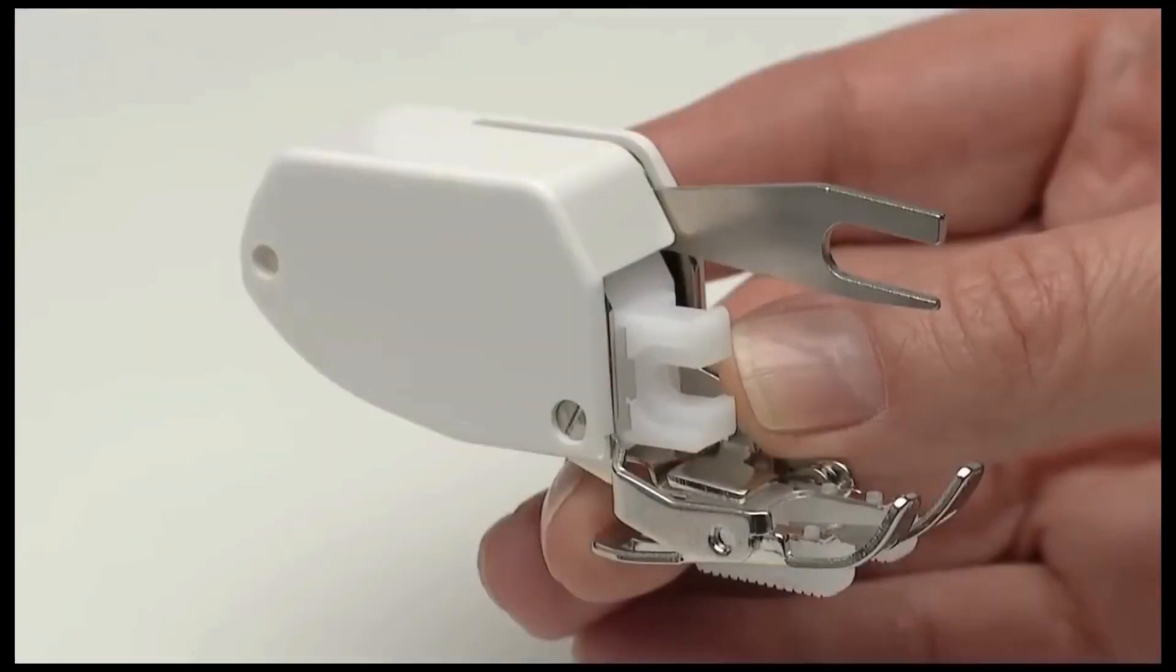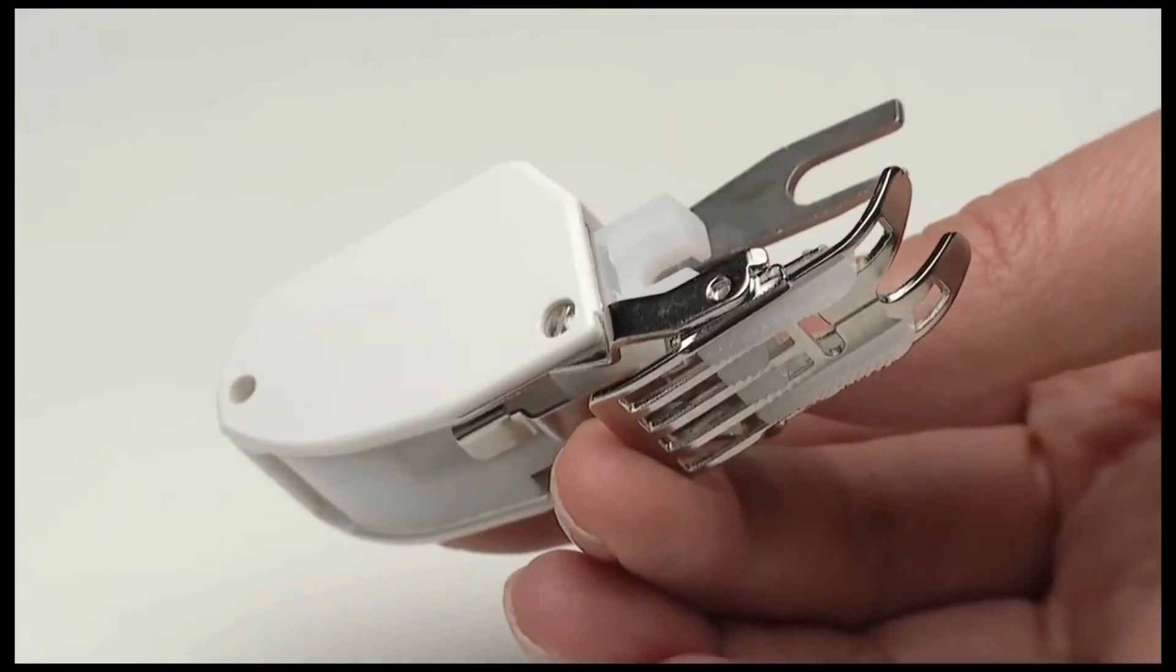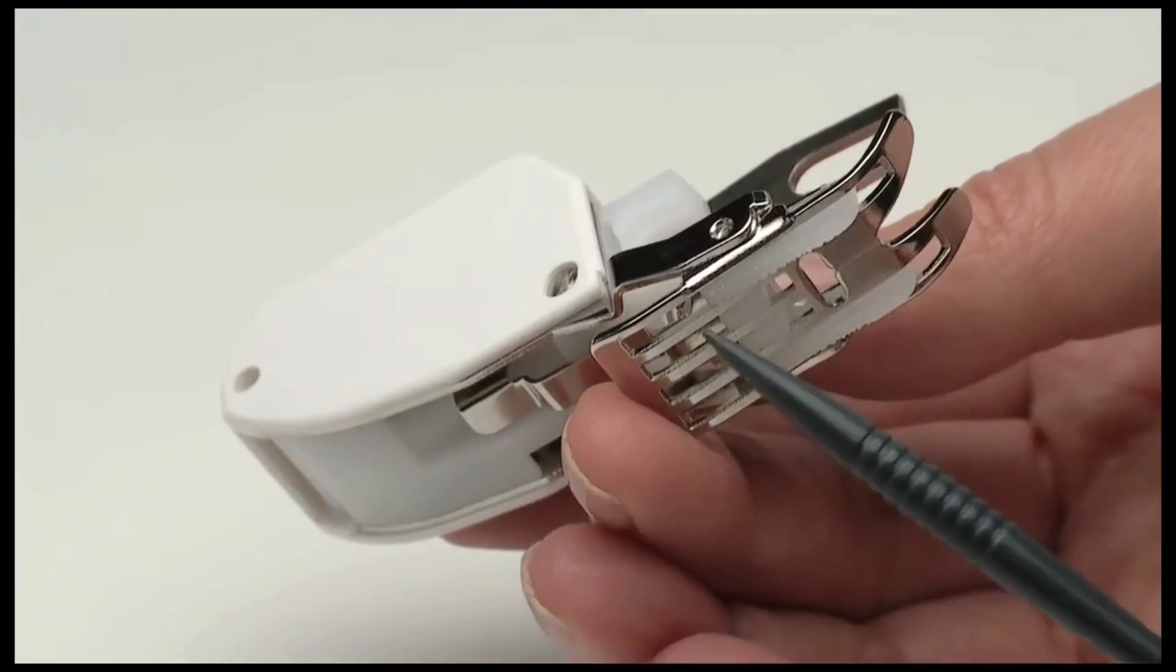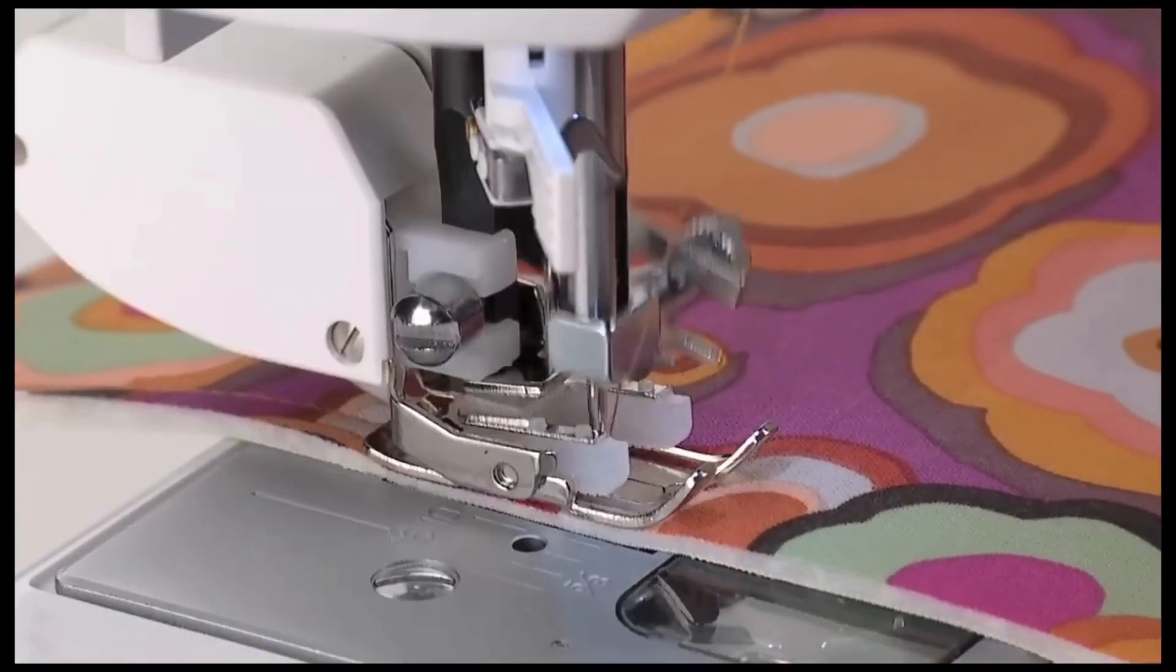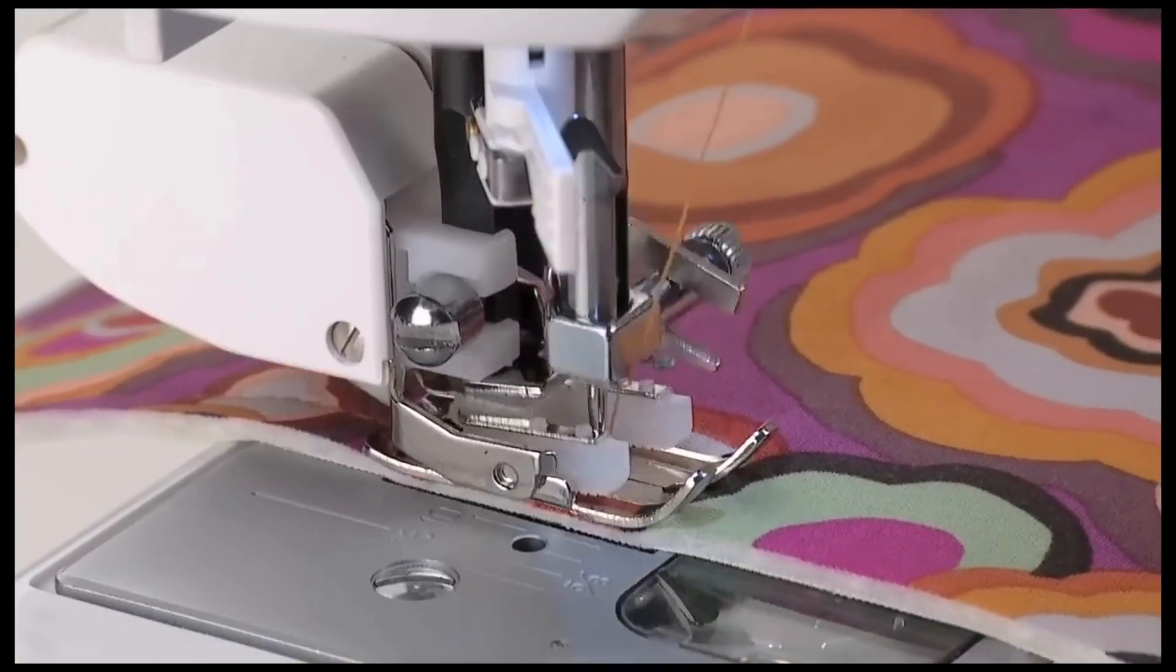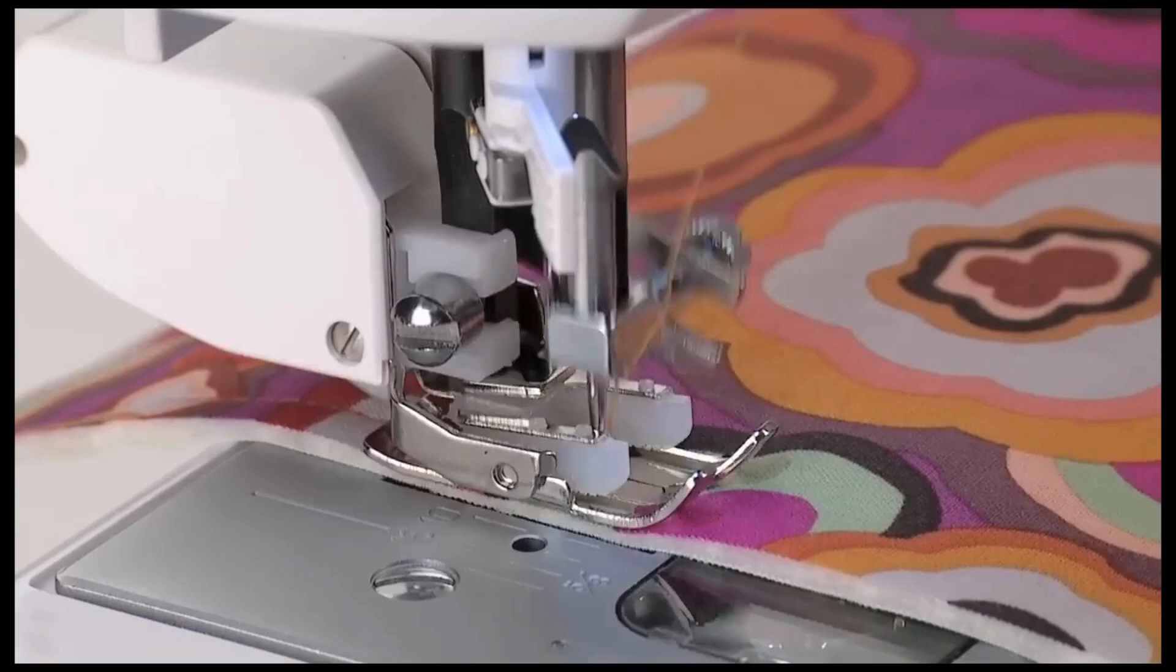The Even Feed Foot has its own set of feed dogs that work in conjunction with the machine's feeding system to facilitate the movement of the fabrics while stitching. The upper feeding mechanism pulls the top fabric at the same rate that the machine's feed dogs are pulling the bottom fabric.